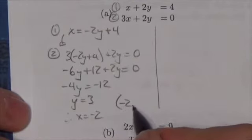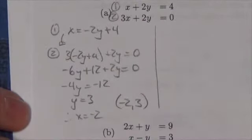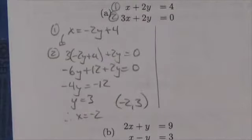And so the point we're trying to get is negative 2, 3. There's our solution. Now I'm going to show you another way of doing this.